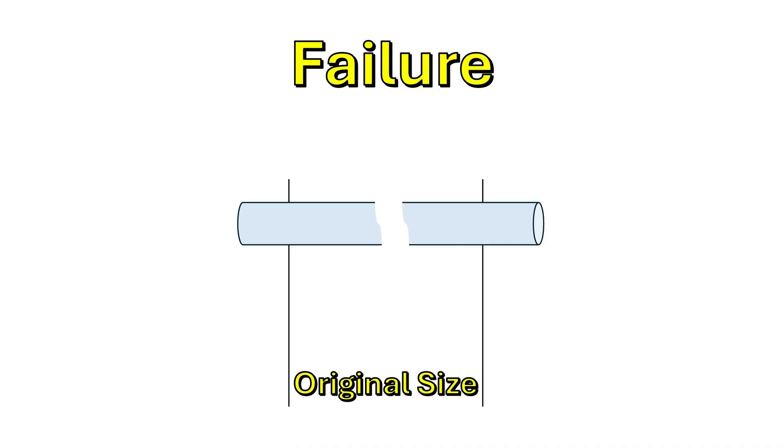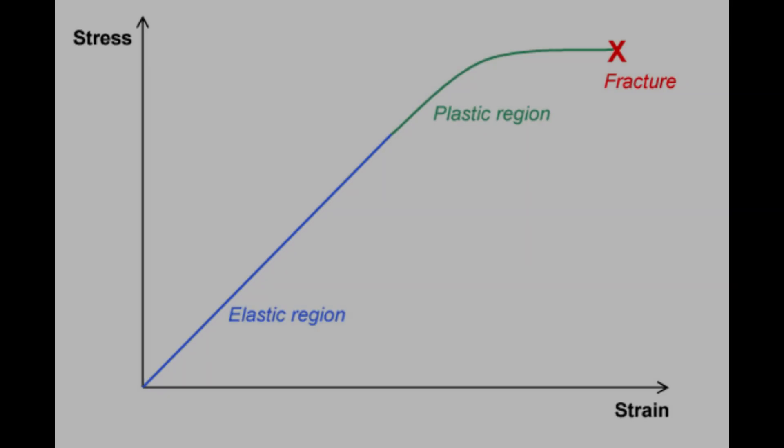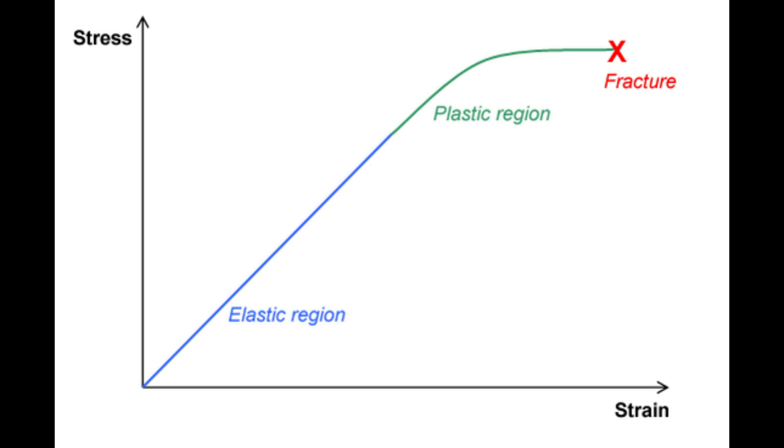Finally, when the stress on the material becomes large enough and enough damage has been done to the molecular structure, failure occurs. This graph depicts these three phases of stress and strain. Note that in the elastic phase, the relationship between stress and strain is linear. Once the strain reaches a certain point, the stress begins to slow. This is due to the breaking of molecular bonds within the material, or what we call damage. As the strain continues, we eventually reach the failure point of the material.